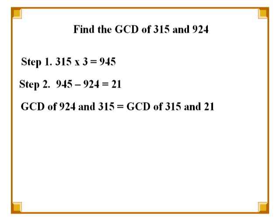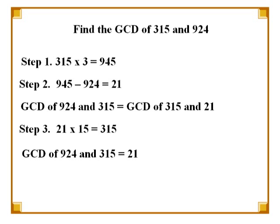Now we choose the lower number between 315 and 924, which is 315. We then calculate the greatest common divisor of 315 and 21. We multiply 21 by a number such that the product is as close as possible to 315. We find that 21 times 15 gives us 315, so the difference is 0. This means that the GCD of 315 and 21 is 21, and hence the greatest common divisor of 924 and 315 is 21.